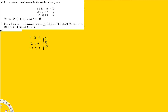We need to make all values below and above each pivot equal to 0. Starting with 1 3 4, we eliminate the entry in the second row by multiplying the first row by -2 and adding to the second row. That gives us -2R1 + R2, resulting in 0, then -6+1 = -5, and -8+3 = -5, equal to 0.